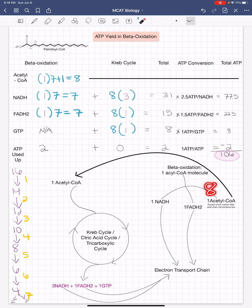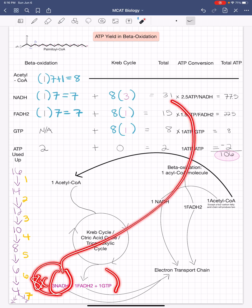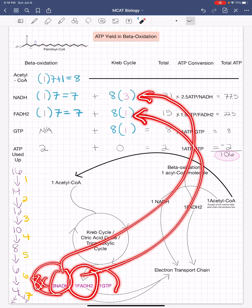Now these 8 molecules of acetyl CoA end up going into the Krebs cycle, so we will need to multiply 8 with the number of products produced in the Krebs cycle. So we have 8 times 3 for NADH, 8 times 1 for FADH2, and 8 times 1 for GTP.